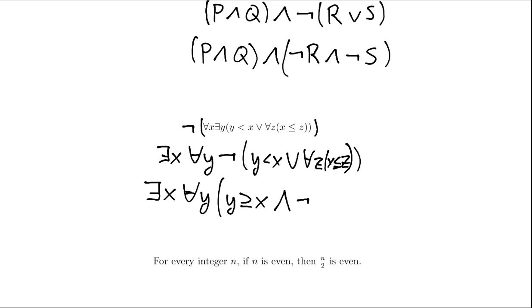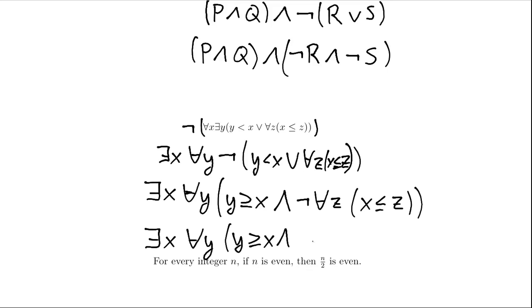And then we are left with the negation of 'for all Z, X is less than or equal to Z.' We can simplify further — we need to pass this negation over the 'for all Z,' which becomes 'there is a Z.' And then we have the negation of X is less than or equal to Z, which says X is greater than Z. And there we have the negation.